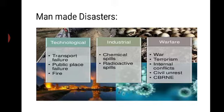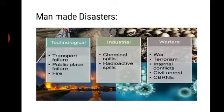Of the 7,516 km long coastline, close to 5,700 km is prone to cyclone and tsunami. 68% of cultivable area is vulnerable to drought. Hilly areas are at risk from landslides and avalanches. About 25% of the total geographical area of India is prone to landslides. The Brahmaputra and Gangetic basins are the most flood-prone areas. The northwest regions and west-flowing rivers Krishna, Kaveri and Mahanadi are other flood-prone areas.